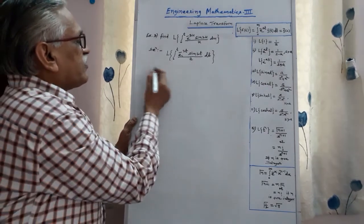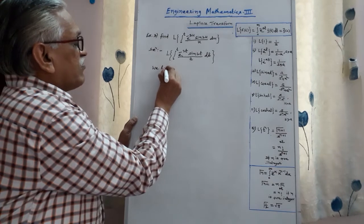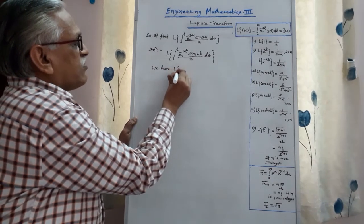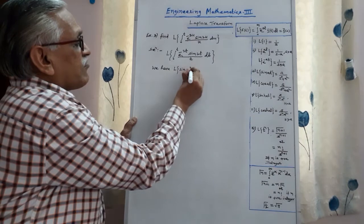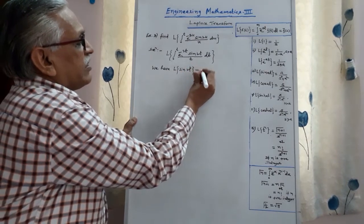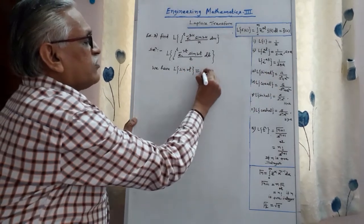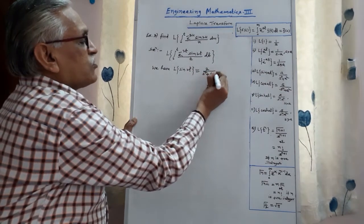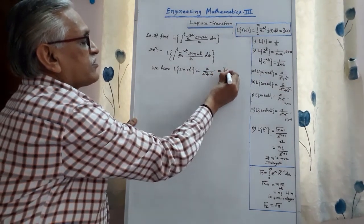Performing step by step: the Laplace transform of sin(2t) is 2/(s² + 4). We call this f̄(s).